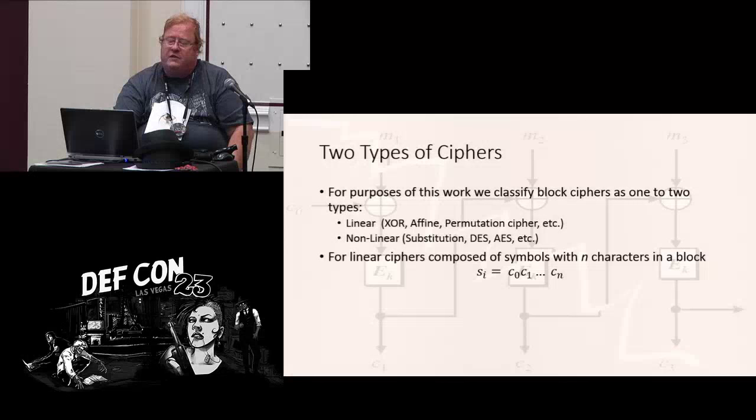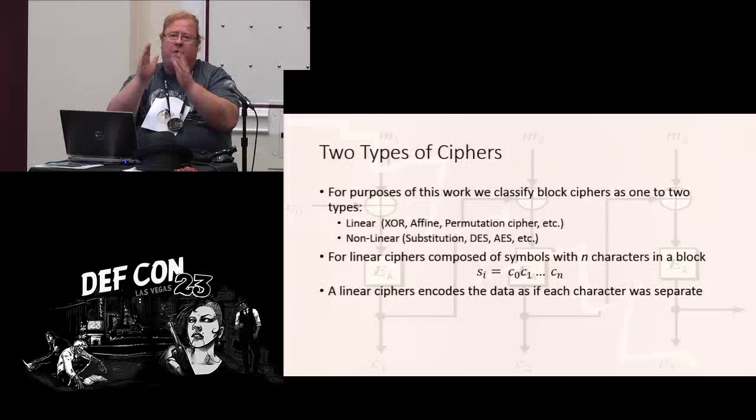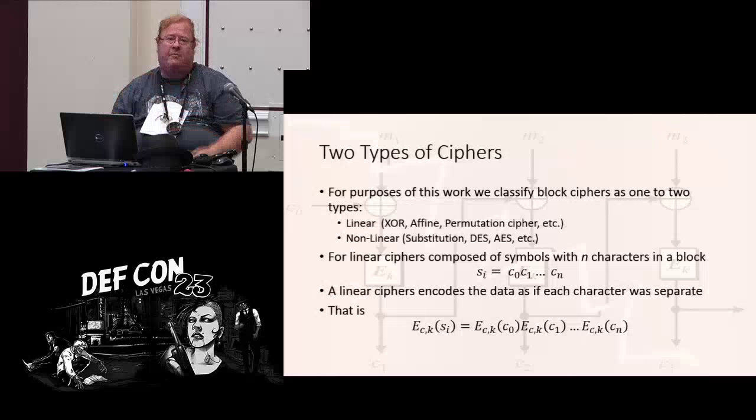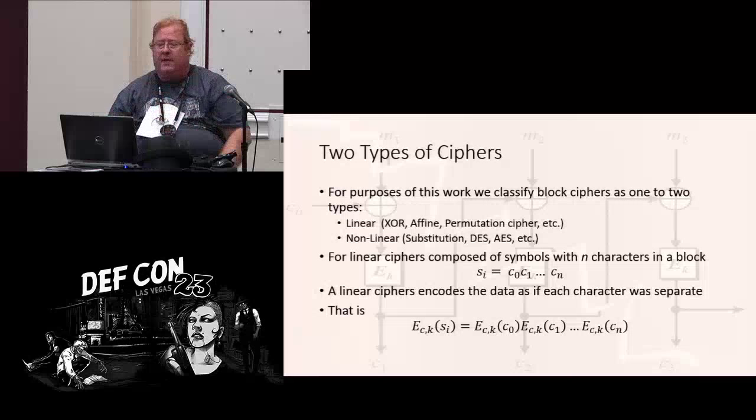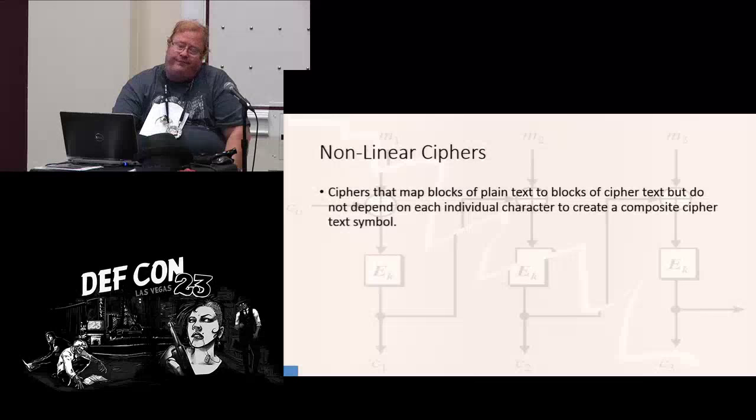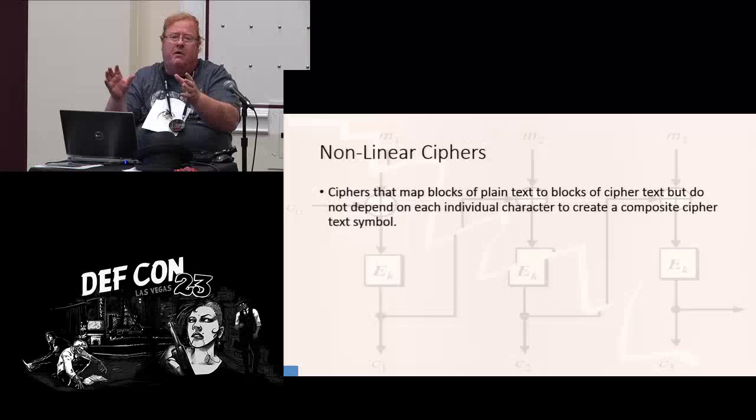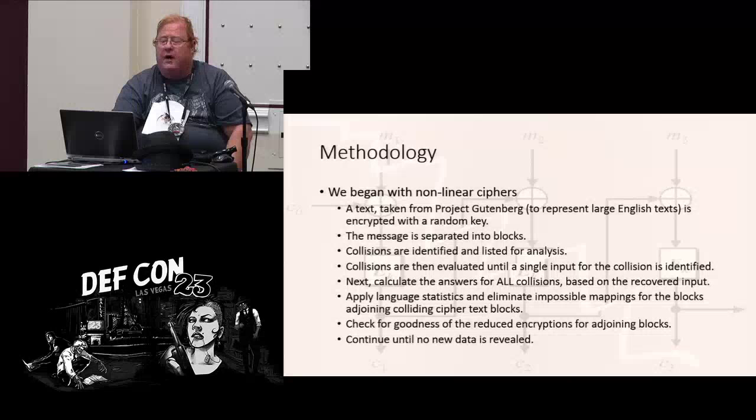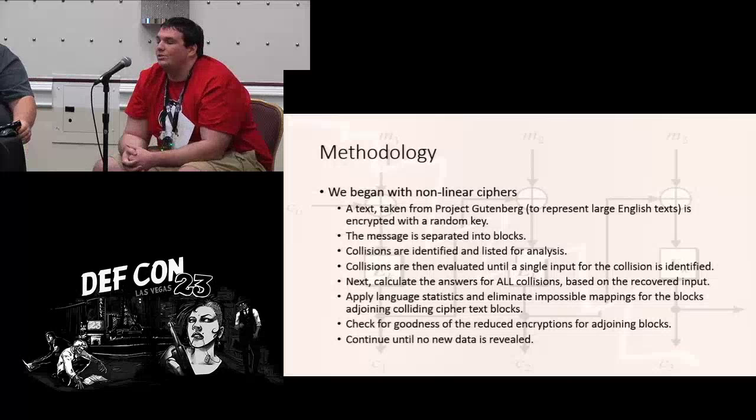We're going to classify ciphers a little bit differently for the purpose of this talk. We're going to have one of two types. The linear, for example, XOR affine permutation cipher. And I know you don't generally throw permutation in there, but if you use this meta-character assumption where everything maps into the same meta-character, it works. And we're also going to use non-linear, like the substitution, the AES, DES, triple DES. Those are non-linear type ciphers. The difference is for a linear cipher, for each of the characteristic letters or characters that are in there, we can actually treat them as if they are encrypted in place one character at a time. We can basically say that there's a concatenation for the block if you encrypt each character separately.